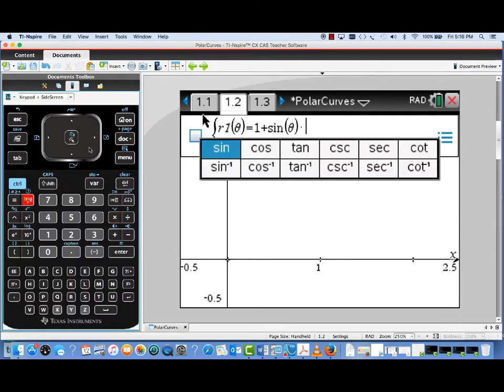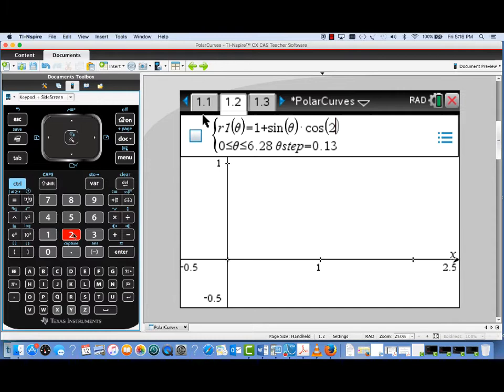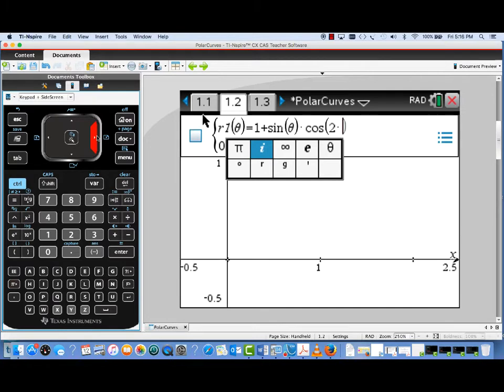And that polar curve was described as 1 plus the sine of Theta times the cosine of 2 Theta. So we're going to type that in using the trig menu, and we're using the symbol menu to pick up the symbol Theta.